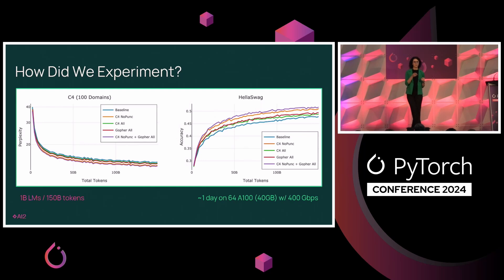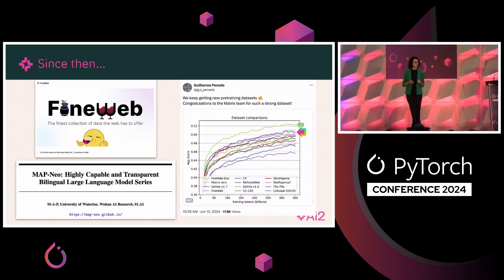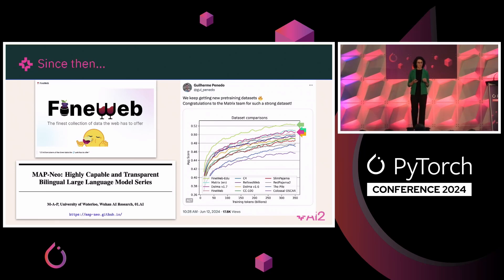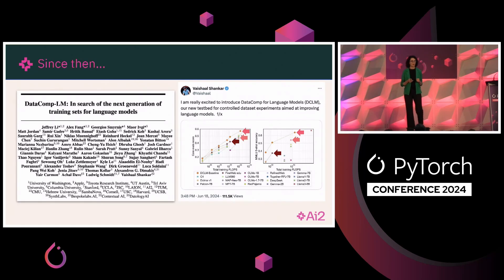We evaluated by looking at perplexity and how much improvement we were making in perplexity during training, and also at end-task applications, collecting several of these tasks. Since our Dolma release, we are seeing other open-source community members also contributing to building similar datasets, like FineWeb from HuggingFace, MapNew, and most recently the DataComp-LM dataset from colleagues at the University of Washington and many other institutes.